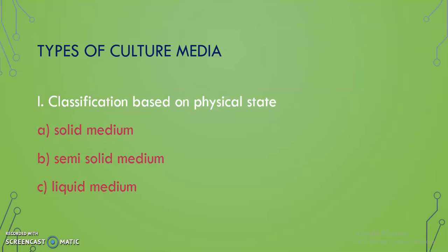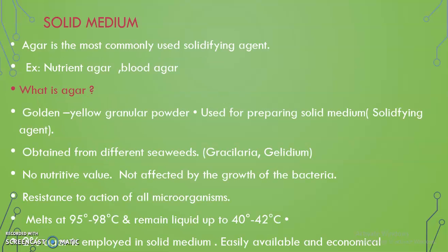Types of culture media. First classification is based on physical state: solid medium, semi-solid medium, and liquid medium.